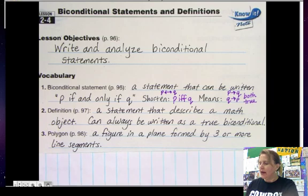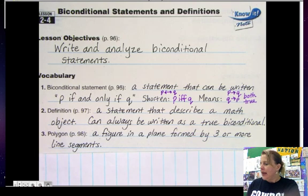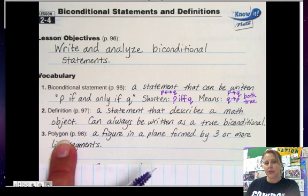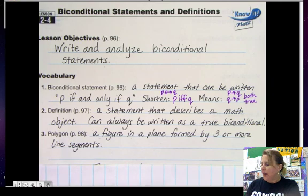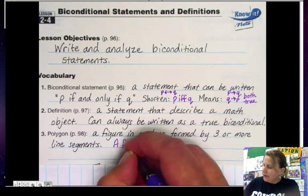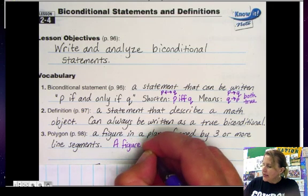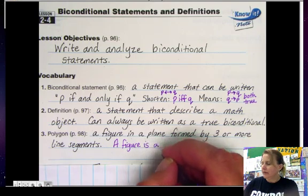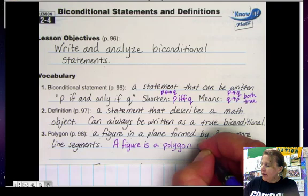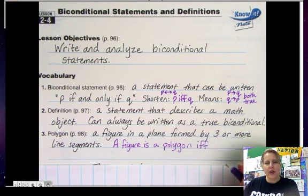Next, a polygon is a figure in a plane that is formed by three or more line segments. If I were to write this as a biconditional statement, I would write: a figure is a polygon if and only if,